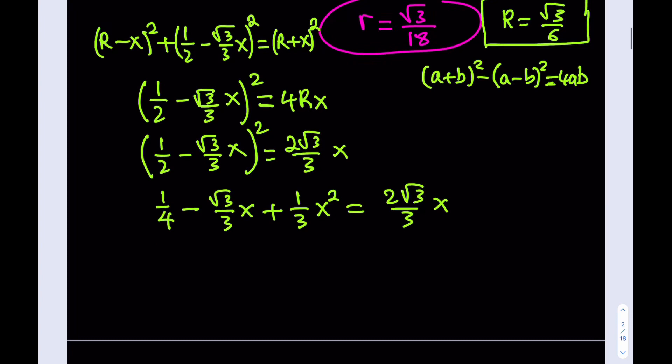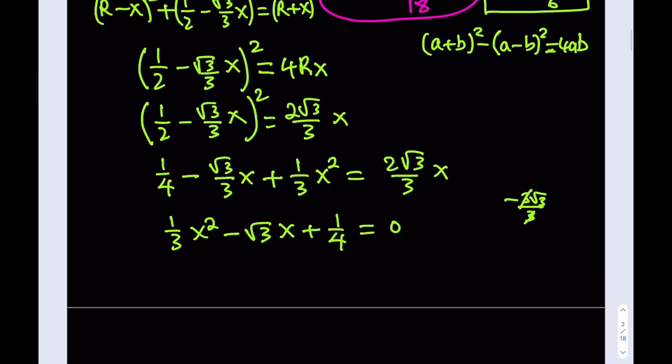If I subtract, that's going to give me 1 over 3x squared minus... if you subtract 1 times this quantity minus 2 times the quantity, it's going to be minus 3 times, which means that's just going to be root 3x, because it turns into negative root 3 root 3 over 3, which eventually is negative root 3 of x plus 1 fourth, and the whole thing is equal to 0. Let's multiply everything by 12. That's going to give me 4x squared minus 12 root 3x plus 3 equals 0.